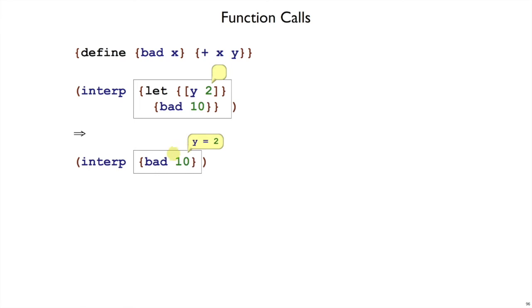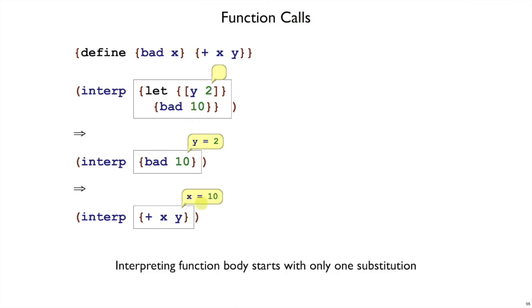So even though, as we interpret this expression, we end up with an environment that says y is 2, when we call the function bad, we don't want to remember that y is 2. We want to evaluate the plus x y from the body only with x equals 10. Because that's the only substitution that should have happened by the time we get here. If we were doing substitutions, we would have substituted only x in the body. So as we start the environment here, we should have only x in the environment.